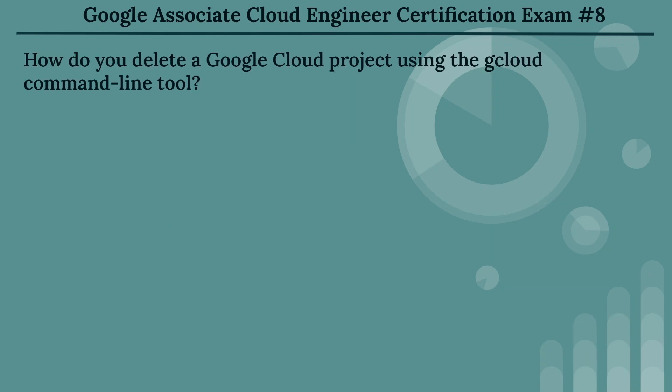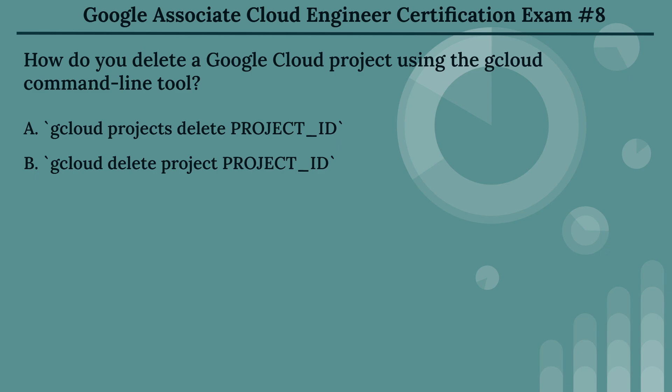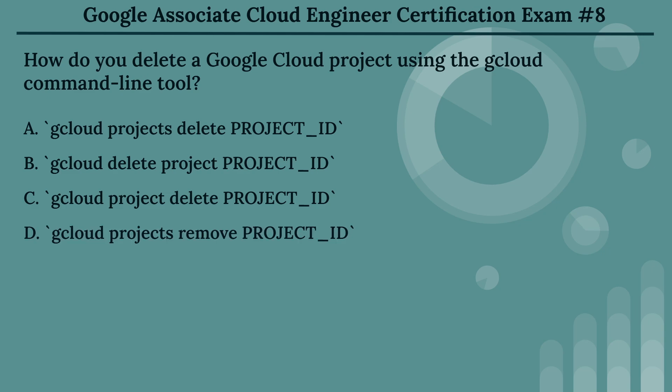The eighth question: how do you delete a Google Cloud project using the cloud command line tool? The options are: Option A, gcloud projects delete PROJECT_ID. Option B, gcloud delete project PROJECT_ID. Option C, gcloud project delete PROJECT_ID. Option D, gcloud projects remove PROJECT_ID.